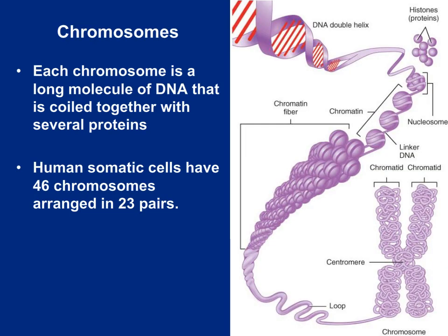Inside the nucleus we find DNA — the genetic blueprint to manufacture new cells and direct the production of proteins and other substances. This DNA can be divided into different chromosomes. A chromosome is basically a DNA molecule wrapped around a protein called a histone. Normally these chromosomes are not visible except during cellular division. Each human somatic cell has 46 chromosomes arranged in 23 pairs.